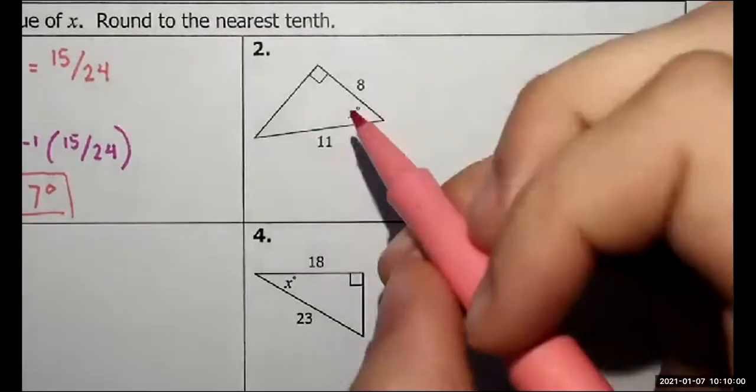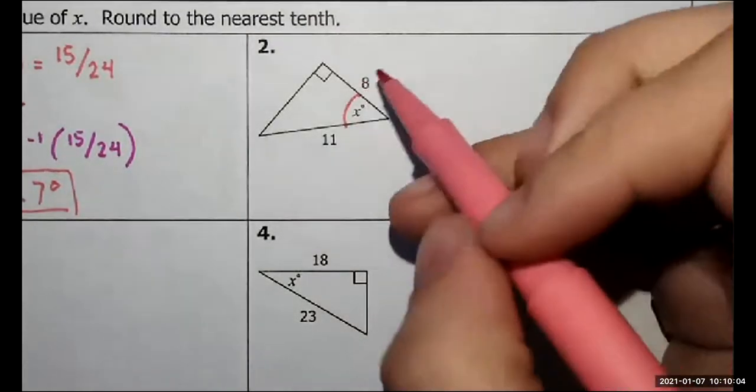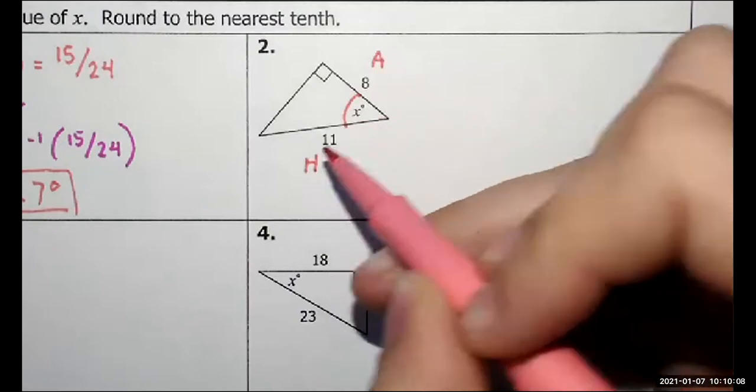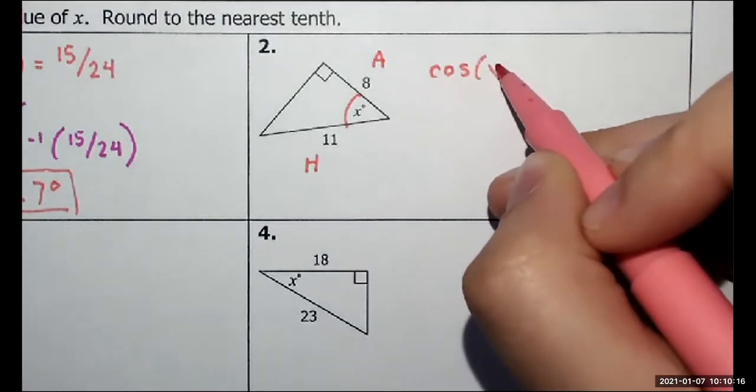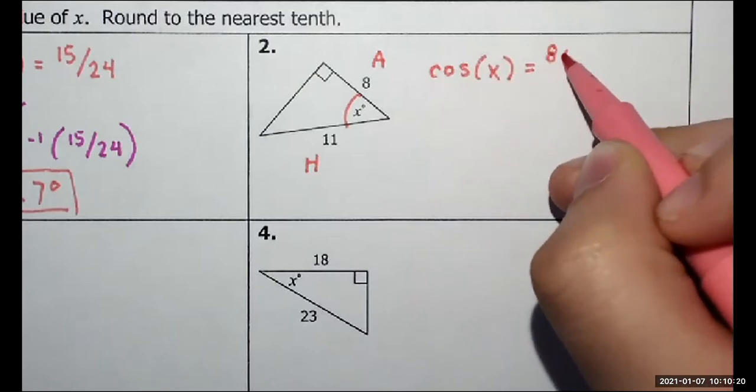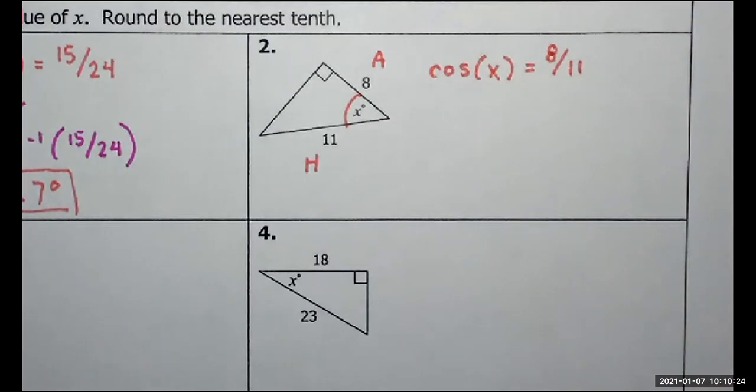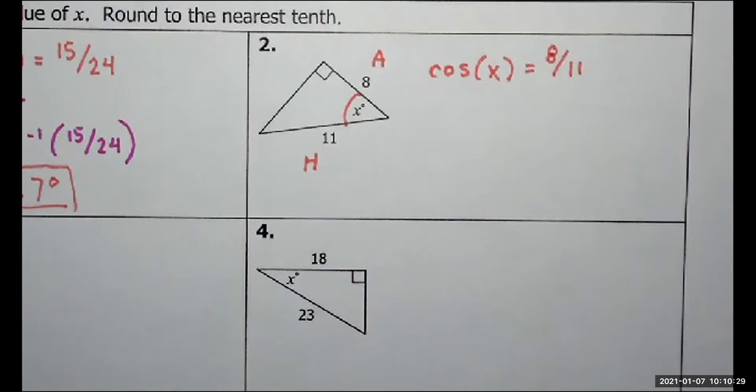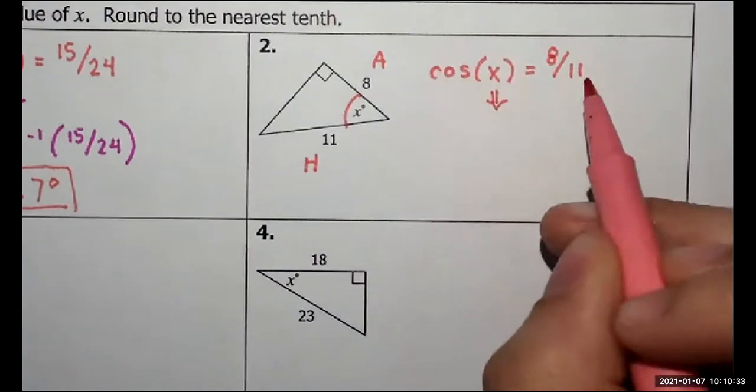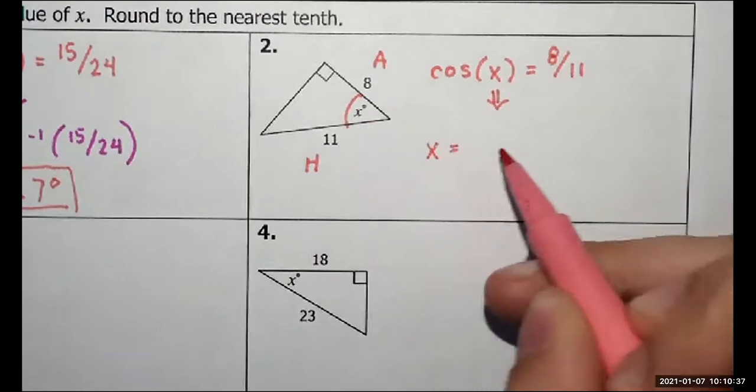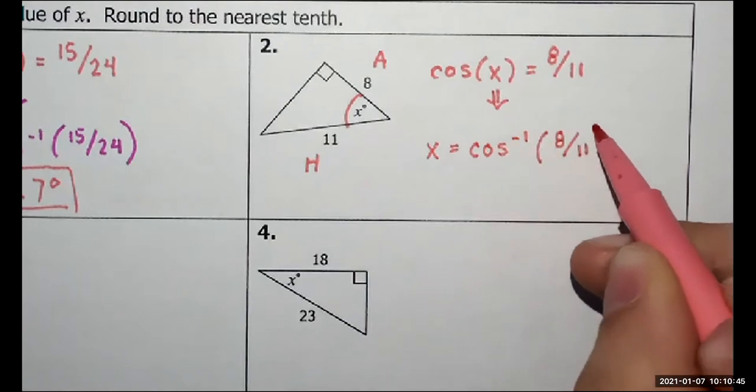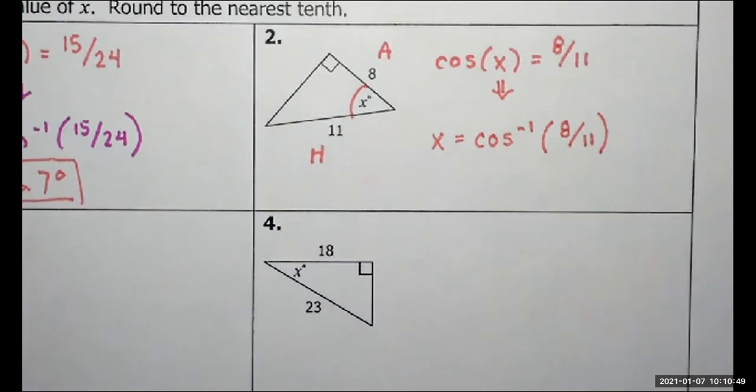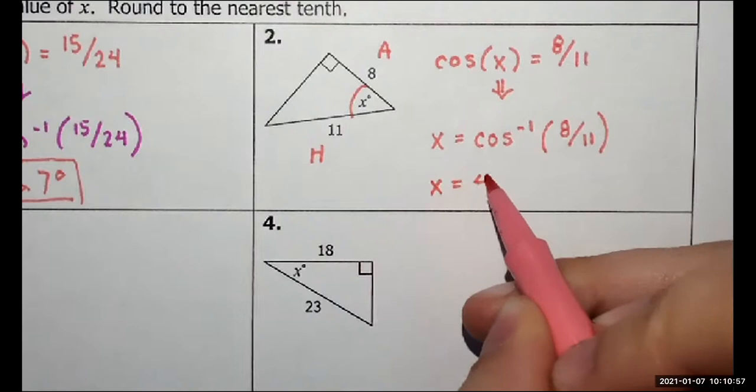On number two, we have our angle that we need to find here, the adjacent side, the hypotenuse. So CAH, cosine. Cosine of x is equal to adjacent over hypotenuse. But again, I cannot solve this problem like this. I need to use the inverse. So if you get comfortable with it, you can jump straight to, instead of doing this step, you can go, okay, I know I need to find x. So x is going to be equal to, if it's a cosine problem, cosine inverse of our fraction 8 over 11. And hop over to the calculator. Cosine inverse 8 over 11 gives 43.3 degrees.